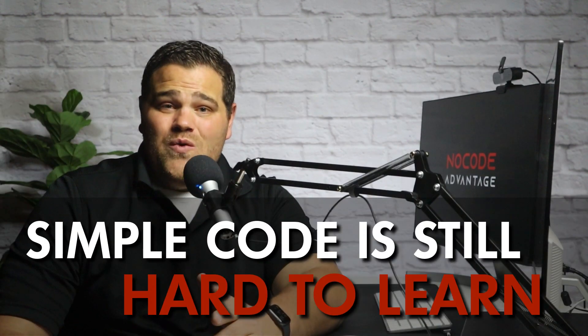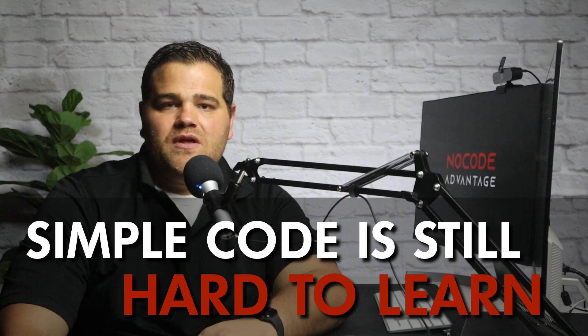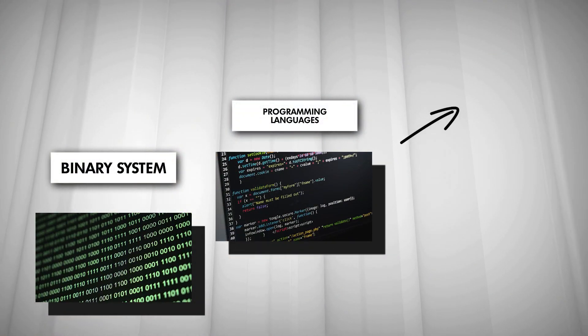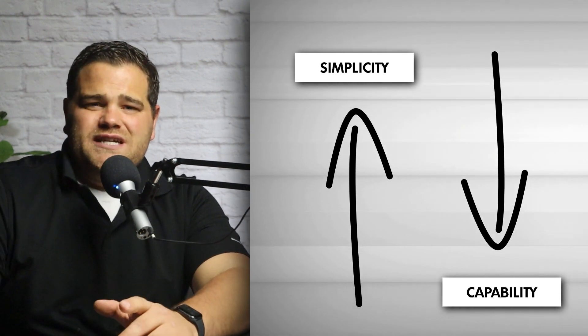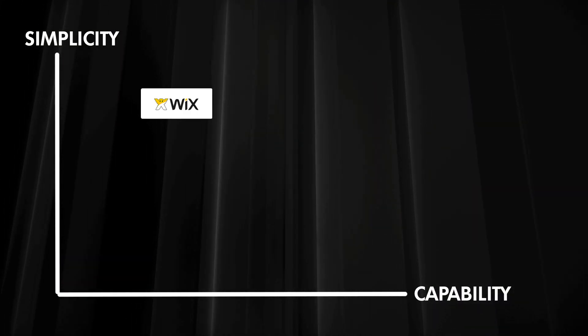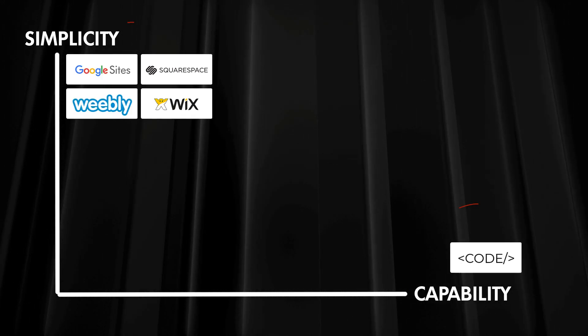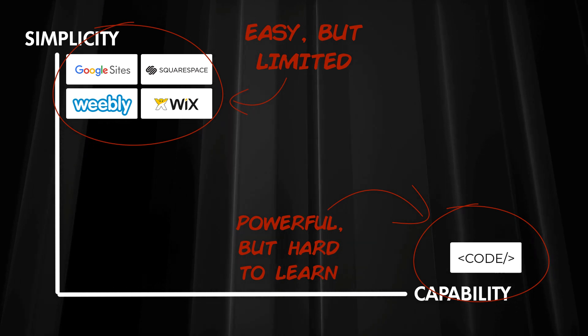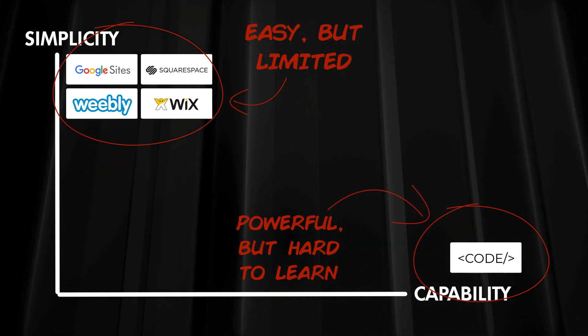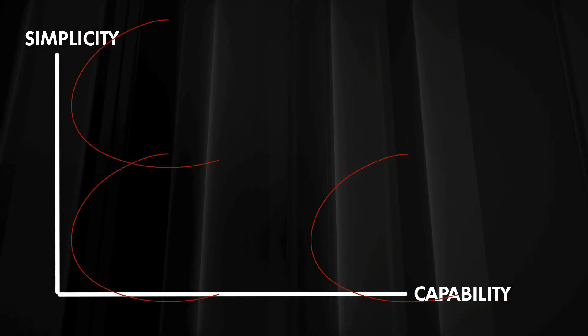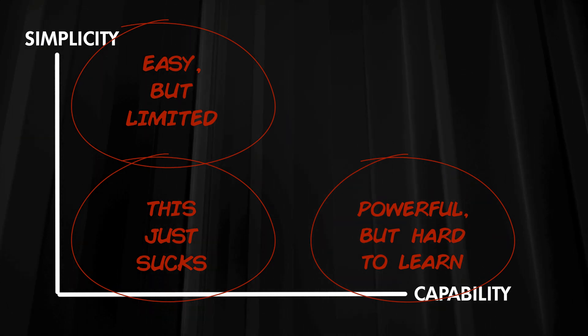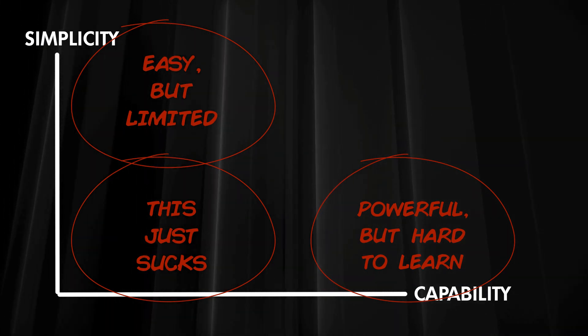But it's still code, and the learning curve is still very steep. As things progressed even further to make building apps and software simpler and easier, a dilemma started to expose itself: the more simple the tool for building, the more limited the build. For example, consider common website builders such as Wix, Squarespace, Weebly, Google Sites, etc. Now don't get me wrong — they're awesome for certain situations. I love what they've done for web development and I've used them many times myself, but they're still extremely limited in their scope of possibility. You could never build a completely customizable site or a full-fledged web or mobile application with any of these tools.